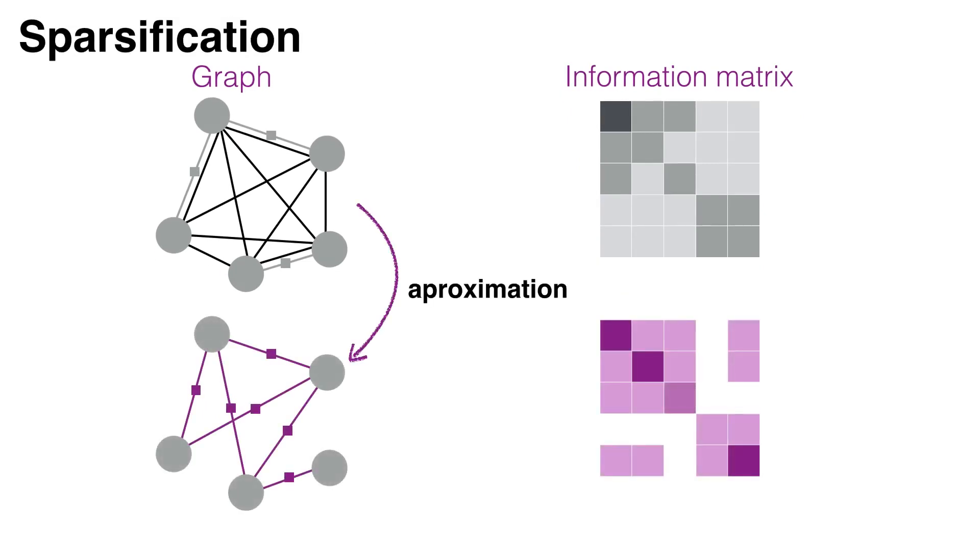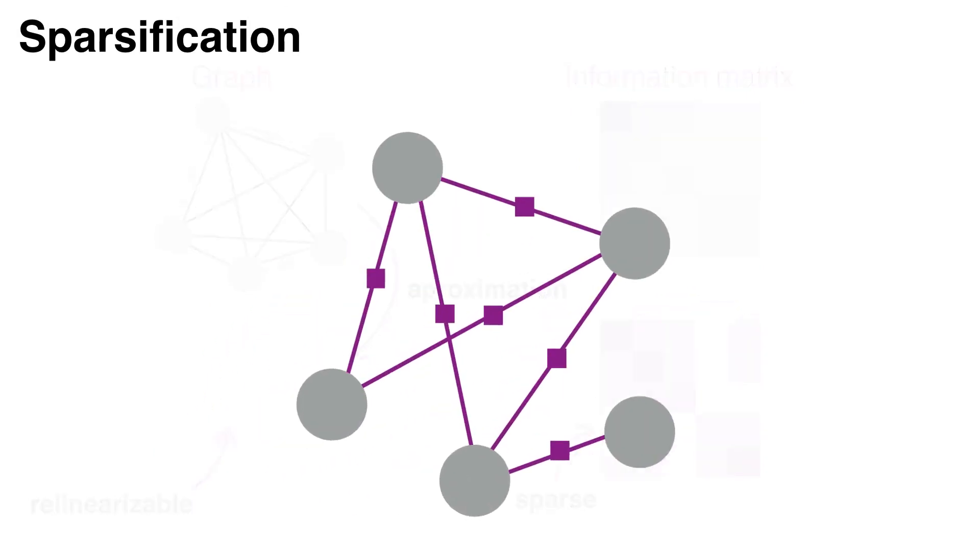Sparsification is finding an approximation that is relinearizable and sparse. Finally, the original graph can be replaced.